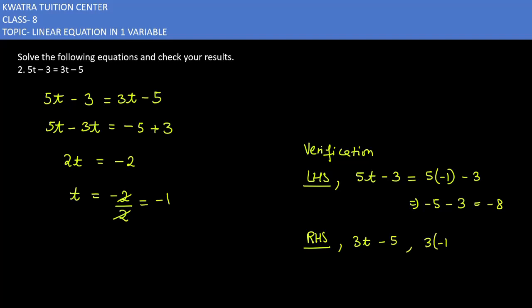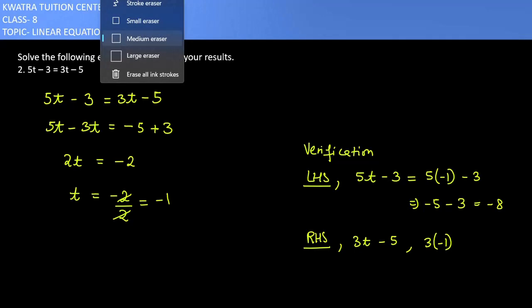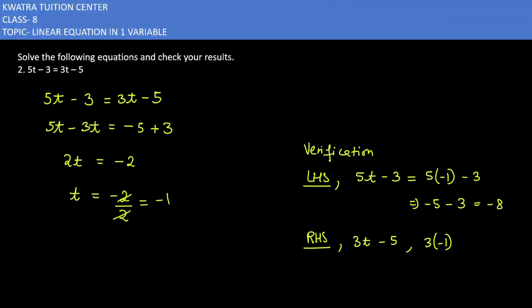For the right hand side: RHS is 3t minus 5. Substituting t equals minus 1, we get 3 times minus 1 minus 5, which equals minus 3 minus 5, giving minus 8. Since LHS equals RHS, the result is verified and correct.